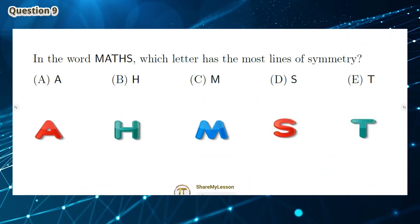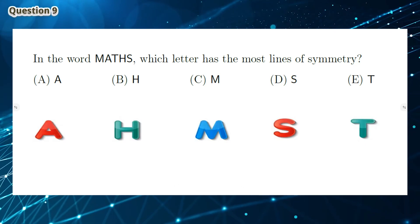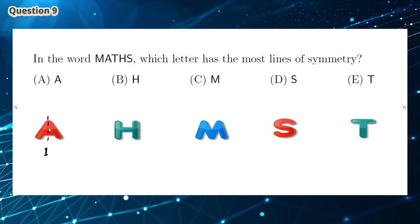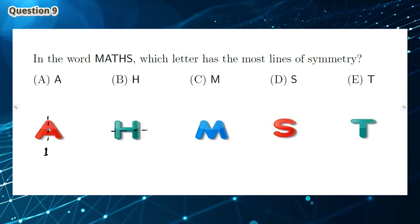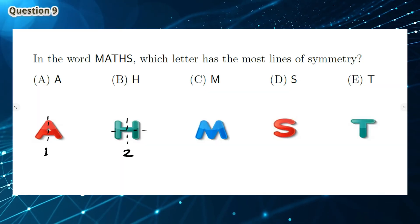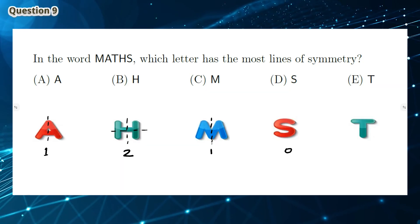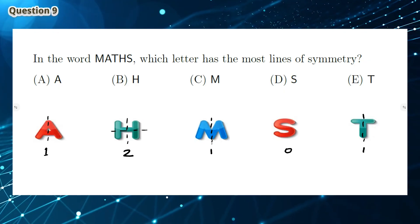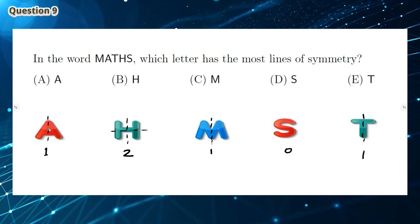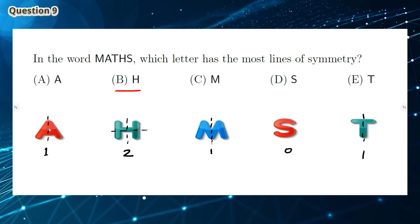Question 9: In the word MATHS, which letter has the most lines of symmetry? If you look at each letter, letter A has one line of symmetry, letter H has 2, letter M has 1, letter S has none, and letter T also has 1. The letter with the most lines of symmetry is letter H, which is answer option B.